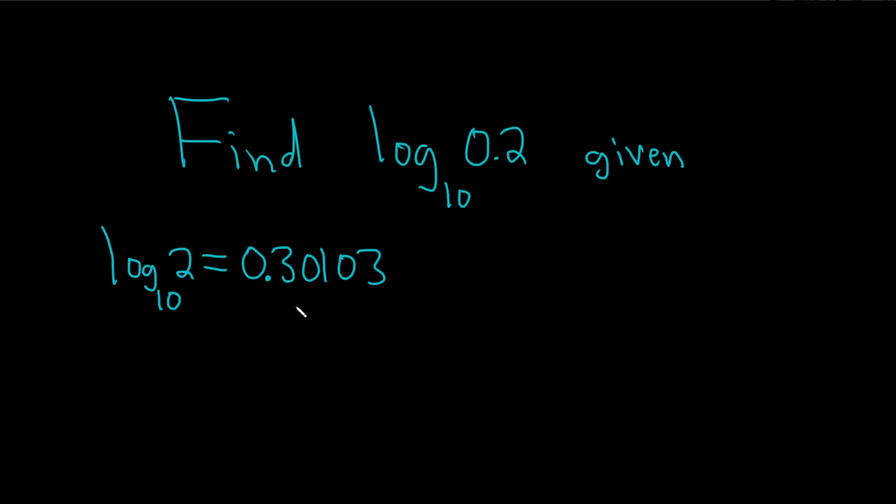Find log base 10 of 0.2 given log base 10 of 2 equal to 0.30103. So what we're going to do is start by writing this down. Solution. We're going to write it down in a way that is going to let us involve this given information. I'll go ahead and write it down again, that's the original one.